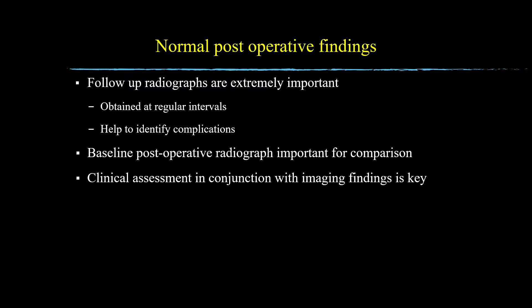Sequential follow-up dedicated knee radiographs are essential and are obtained at regular intervals. Post-operative standing hip-to-ankle radiographs are also obtained annually to assess for alignment and any loss of correction. Loss of correction can be identified on both radiographs and at clinical assessment. It is important to compare follow-up post-operative radiographs with baseline immediate post-operative radiographs to assess for changes in the weight-bearing axis to confirm loss of correction, which may be very subtle if only the most recent radiographs are used for comparison.